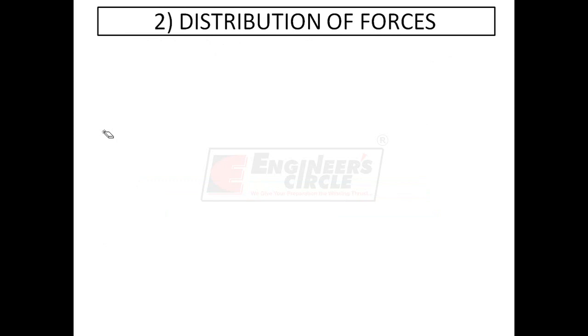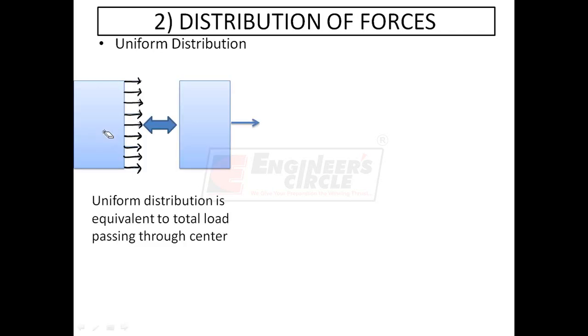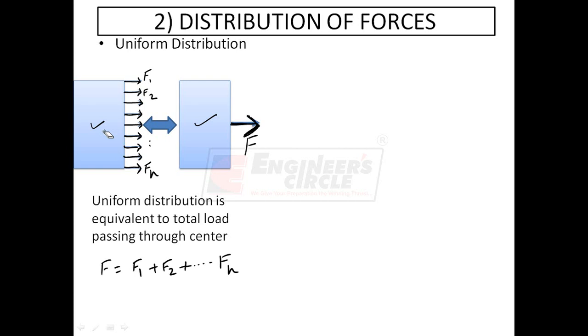The second concept in basic mechanics is distribution of forces, which can be uniform or non-uniform. For uniform distribution of forces, such a distribution is equivalent to a single load applied at the center. If the individual loads are F1, F2, and so on up to Fn, then the equivalent load F equals F1 plus F2 plus up to Fn. Whenever you have a uniform distribution of load, remove all those loads and apply a single load F acting at the center of the distribution.